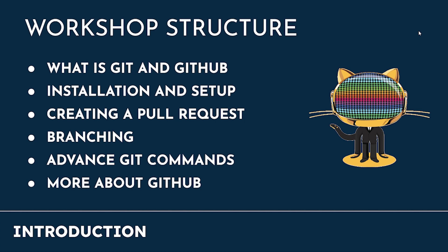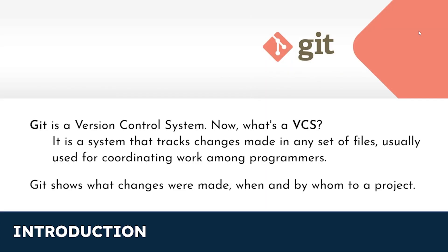So what is Git? Git is a version control system. A version control system is basically a system which will track changes made in any set of files, and it is used usually for coordinating among a set of programmers. Git is absolutely essential when there are multiple programmers working on a single repository. Git tracks not only the changes that you have made, but also when those changes were made and by whom. So if at any time during the project you mess up, you could easily revert back to a previous version of your code. That's the power of Git.